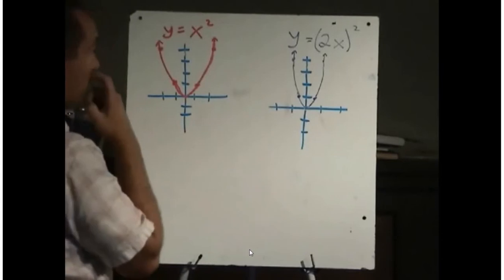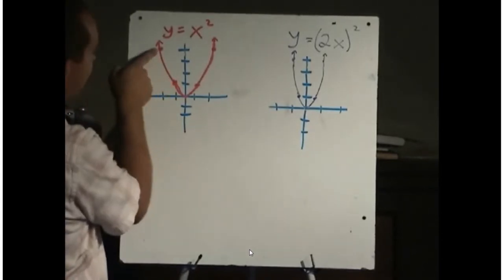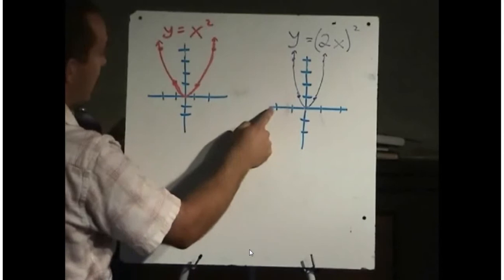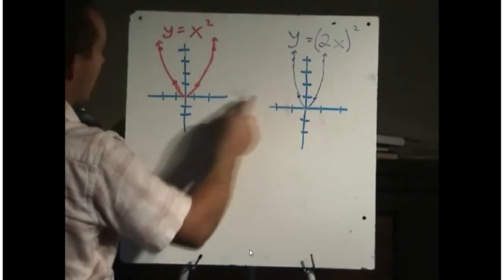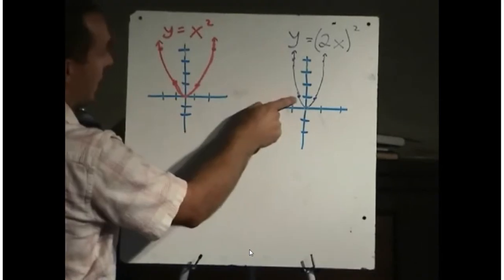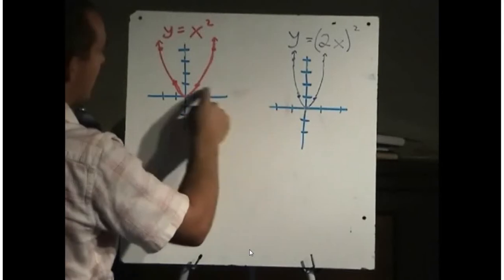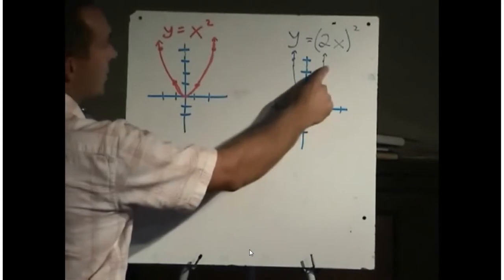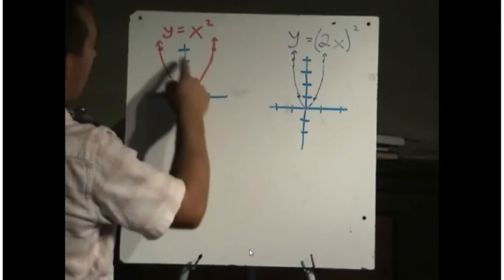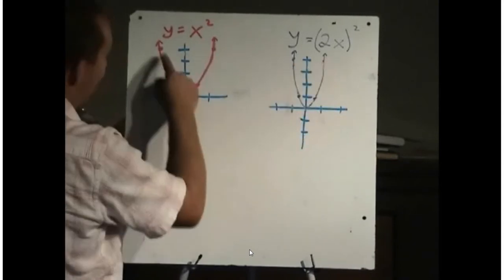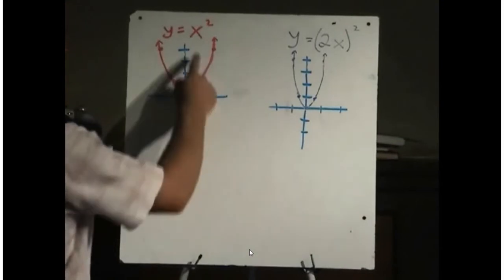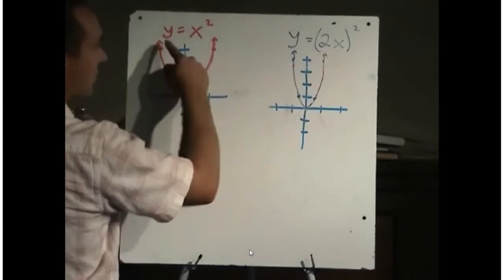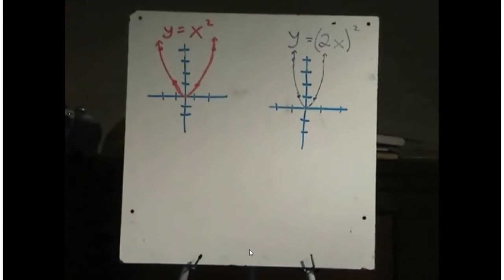Let's look at the points. This point had an x value of negative 2 and a y value of 4. The y value is still 4, but instead of the x value being at negative 2, it's now at negative 1. This x value was at negative 1, now it's at negative one-half. The x value of zero is still at zero. The x value of 1 is now at one-half, and 2 is now at 1. All points have the same y value but their x values are half of what they used to be. When we replace x with 2x, all x coordinates are one-half of what they used to be.